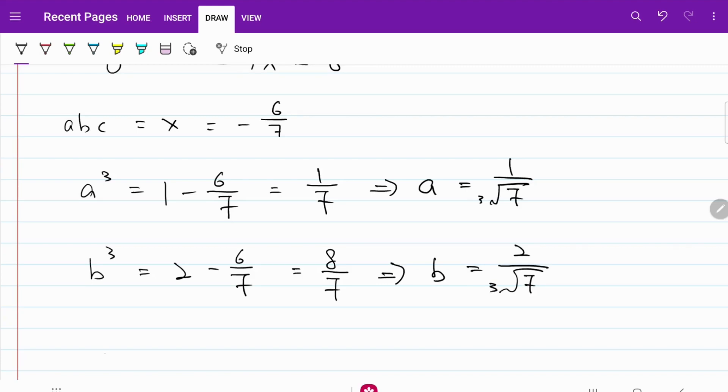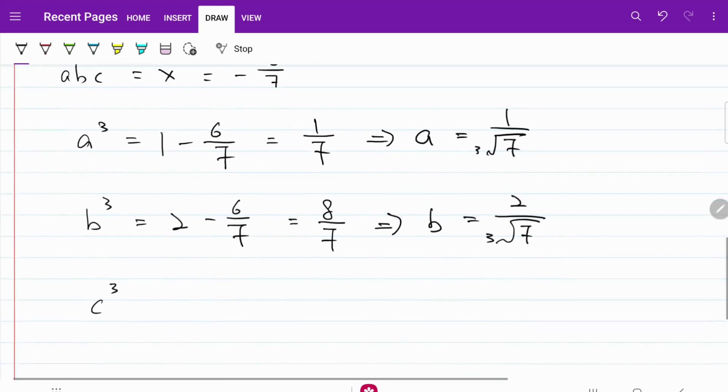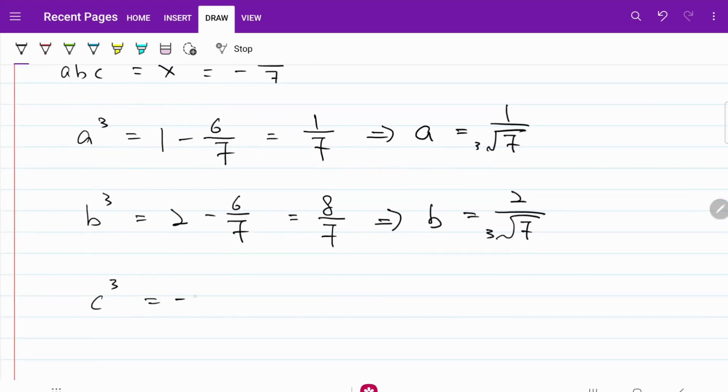As for c, c cube is equal to negative six over seven minus three, which is equal to negative 27 over seven. Therefore, c is equal to negative three over the cube root of seven.